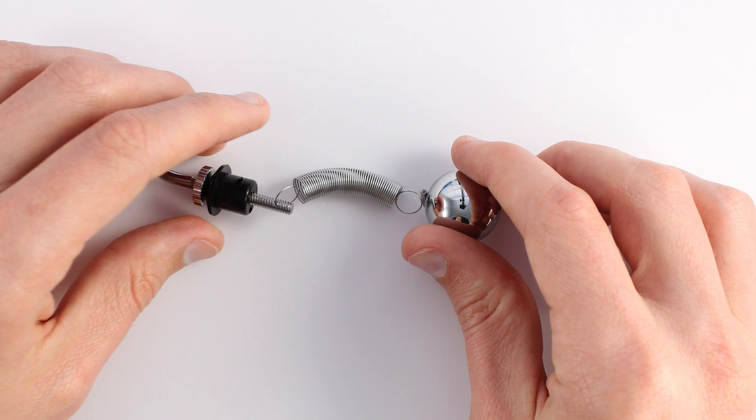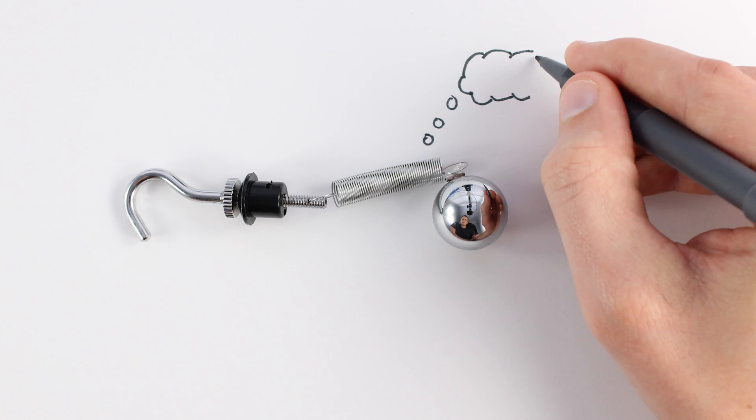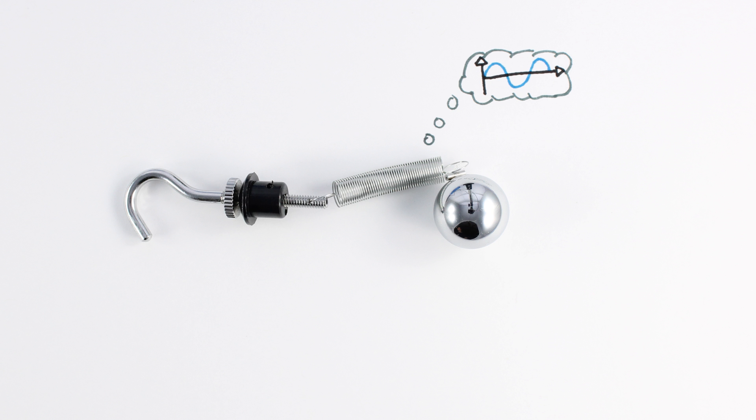So somehow, built into this system, there must be instructions on how to move. The spring has already decided what its motion is going to be, and it doesn't really care how we get the motion going.